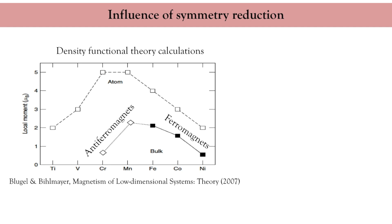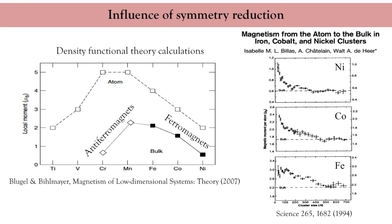A beautiful demonstration of this idea was published by Billas, Châtelain, and de Heer in Science in 1994. The authors measured the magnetic moment of small clusters of nickel, cobalt, and iron, and observed a systematic increase of the magnetic moment upon reducing the size of the clusters. Some oscillations are also visible, probably due to quantum confinement effects.